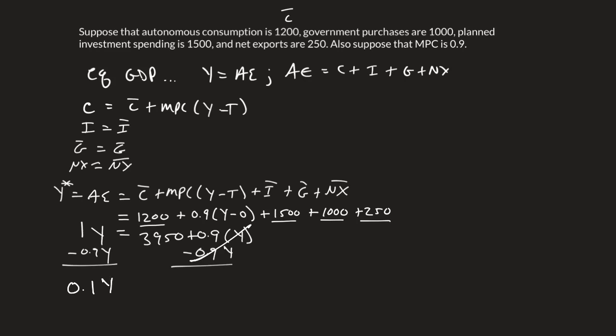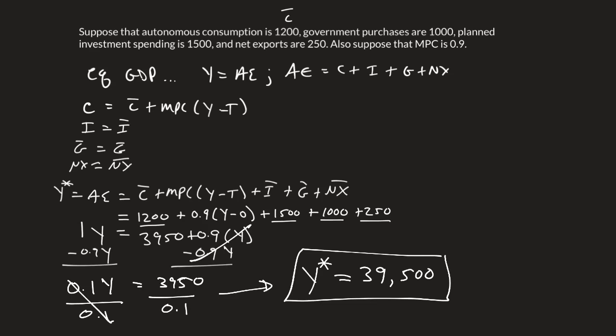So we have 0.1Y equals 3,950. And if we divide both sides by 0.1, those will cancel, and we will get my Y* equal to 39,500. So that's how you find the equilibrium level of GDP when you're given all of this information in some sort of word problem.